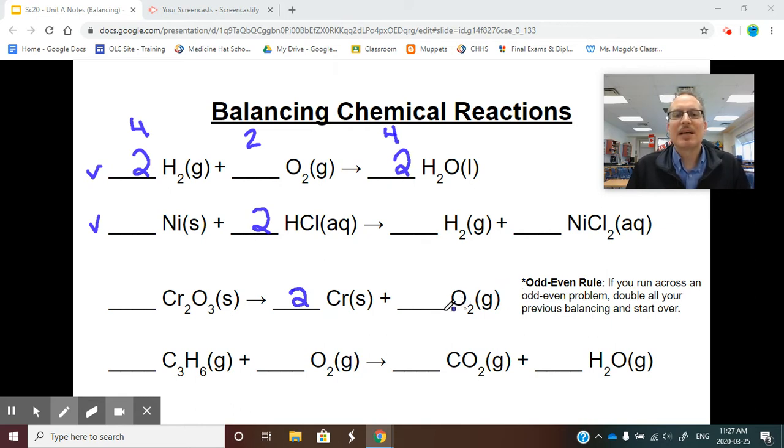My odd-even rule is take the numbers you previously balanced and double them. My two is now going to become a four. I'm going to erase it and start the question again. Two chromiums, four chromiums, so I'm going to put a two here. Four chromiums, four chromiums. Six oxygens, so I'm going to need a three here for six oxygens. Six O's, six O's, four Cr's, four Cr's. Mine is balanced.